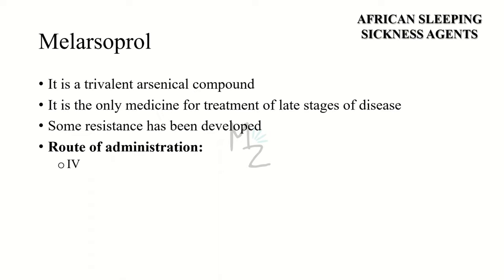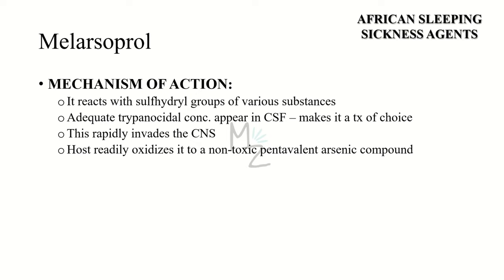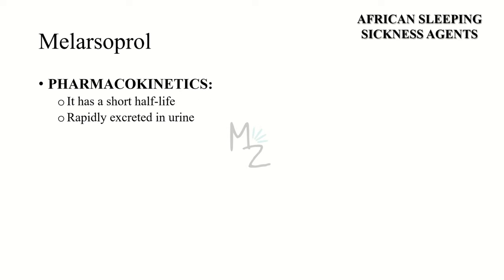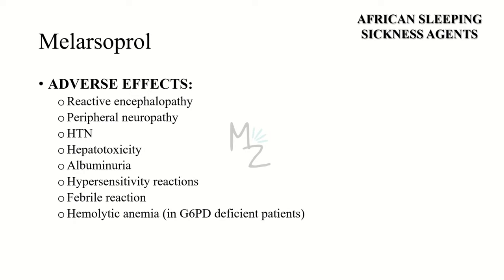Melarsoprol is a trivalent arsenical compound and is the only medicine for the treatment of late stages of African sleeping sickness. Some resistance has developed against it. Its route of administration is intravenous. Mechanism of action: the drug reacts with sulfhydryl groups of various substances including enzymes in both the organism and host. Adequate trypanocidal concentrations appear in the CSF, making melarsoprol the agent of choice for T. brucei rhodesiense, which rapidly involves the CNS. The host readily oxidizes melarsoprol to a relatively non-toxic pentavalent arsenic compound. It has a very short half-life and is rapidly excreted in urine. Adverse effects include reactive encephalopathy, peripheral neuropathy, hypertension, hepatotoxicity, albuminuria, hypersensitivity reactions, febrile reactions, and hemolytic anemia especially in G6PD-deficient patients.